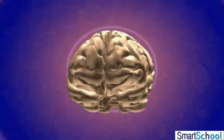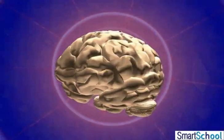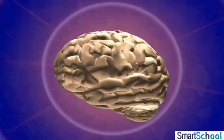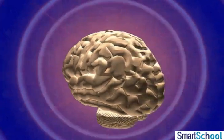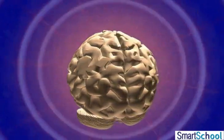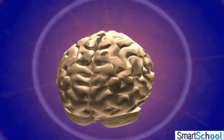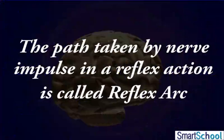However, information input also goes on to reach the brain, where the thinking process occurs. The path taken by a nerve impulse in a reflex action is called the reflex arc.